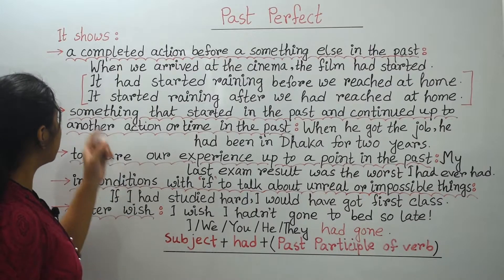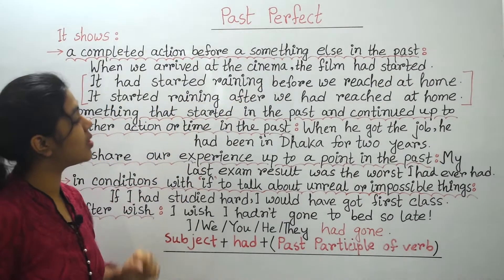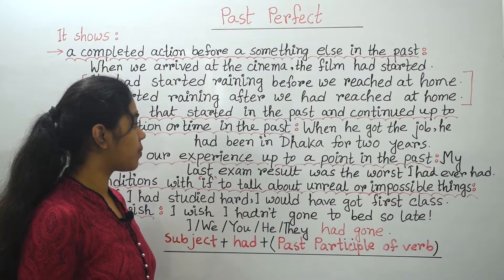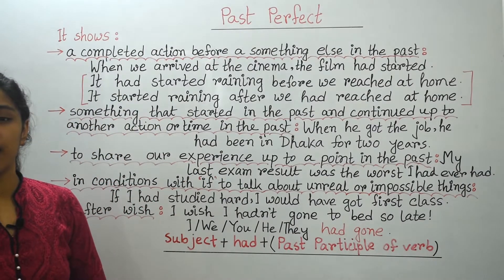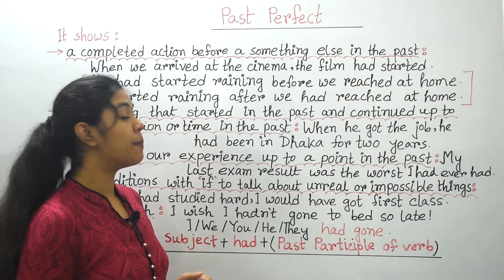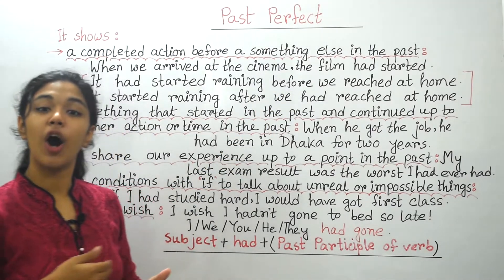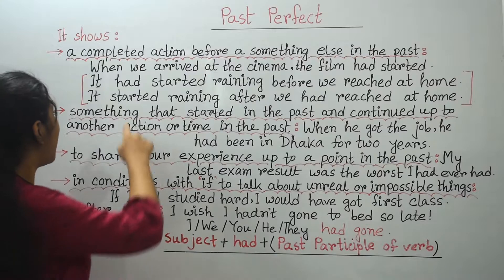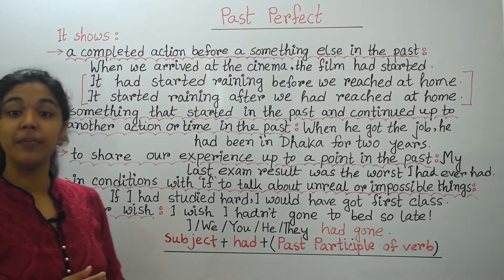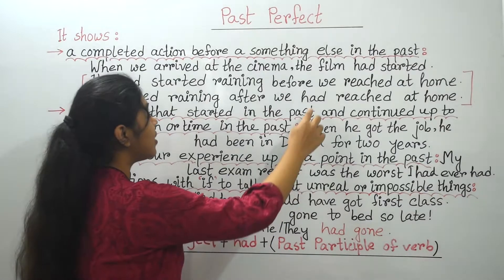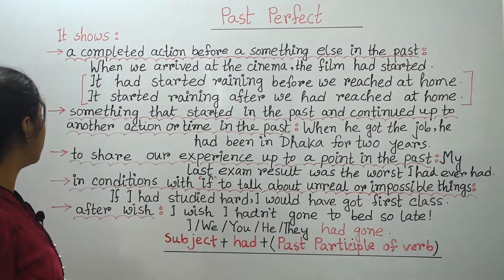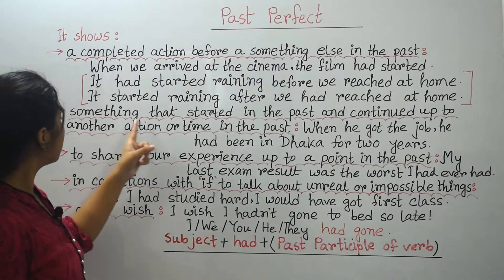Let's see these two sentences: 'It had started raining before we reached home' and 'It started raining after we had reached home.' The easiest way to remember where to put 'had' is: 'before' means earlier, so 'had' is put on the first part of the sentence; 'after' means later, so 'had' is put on the second part.